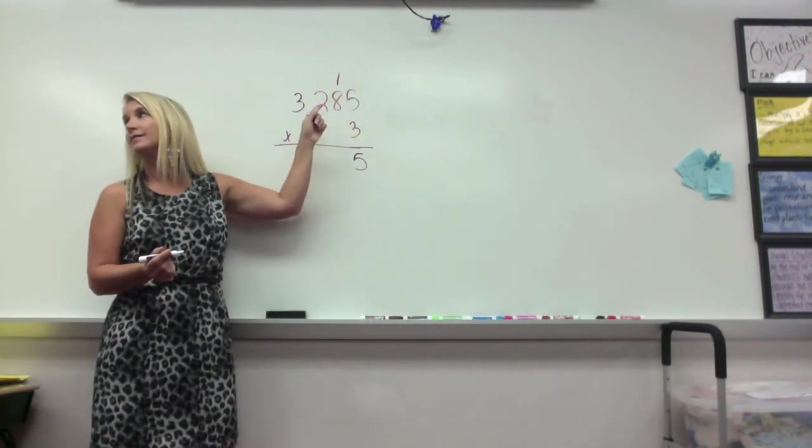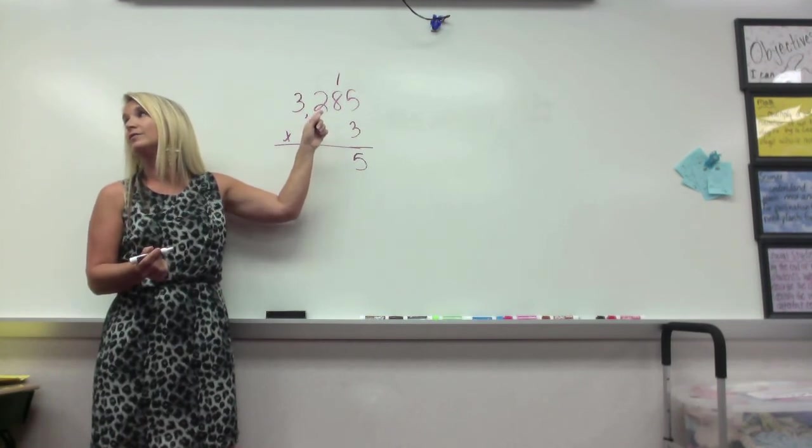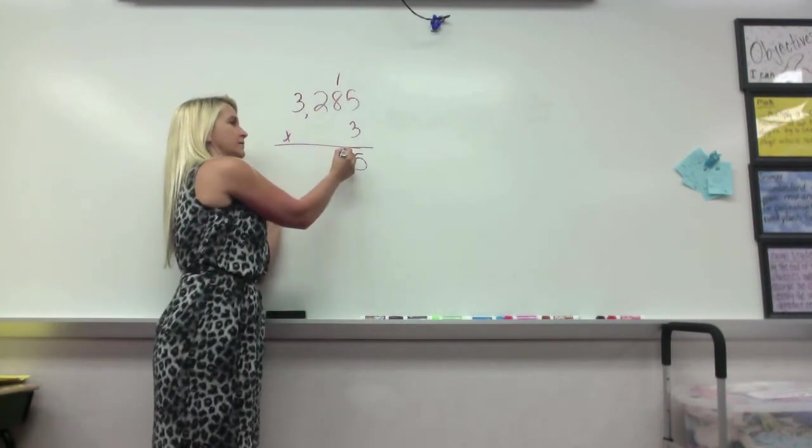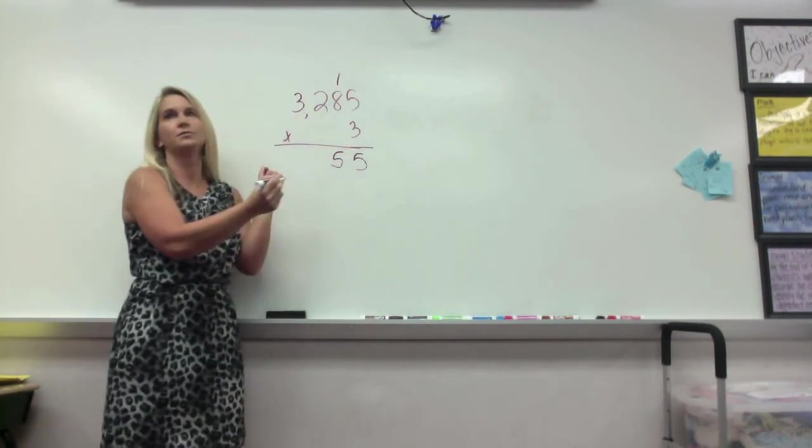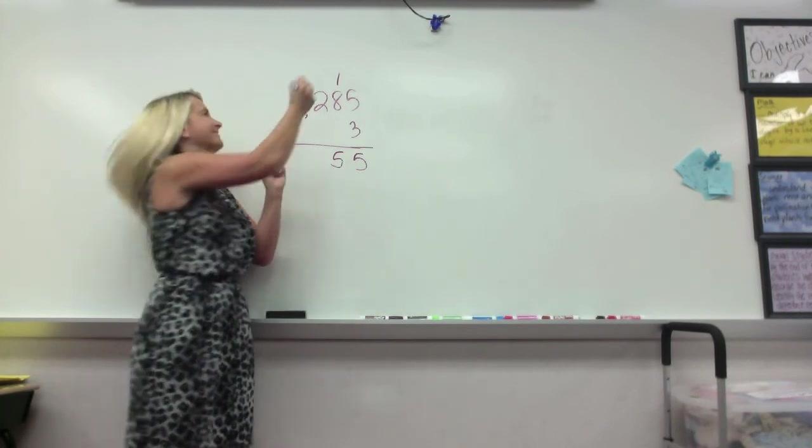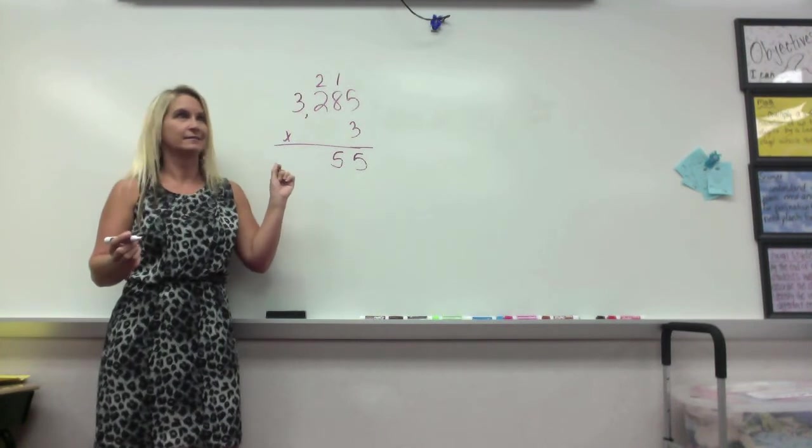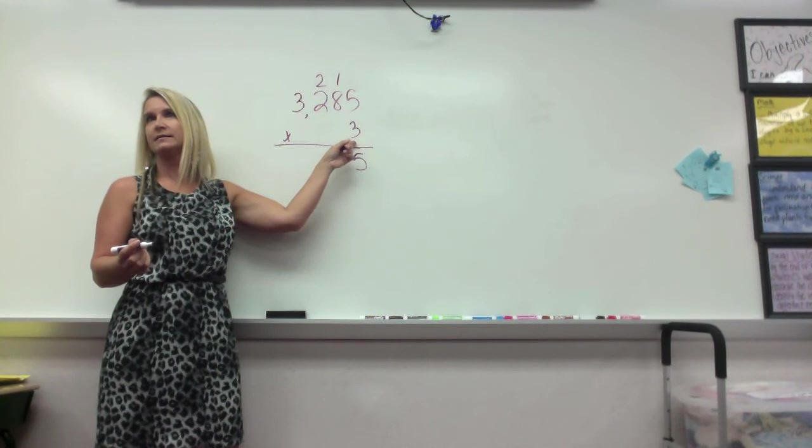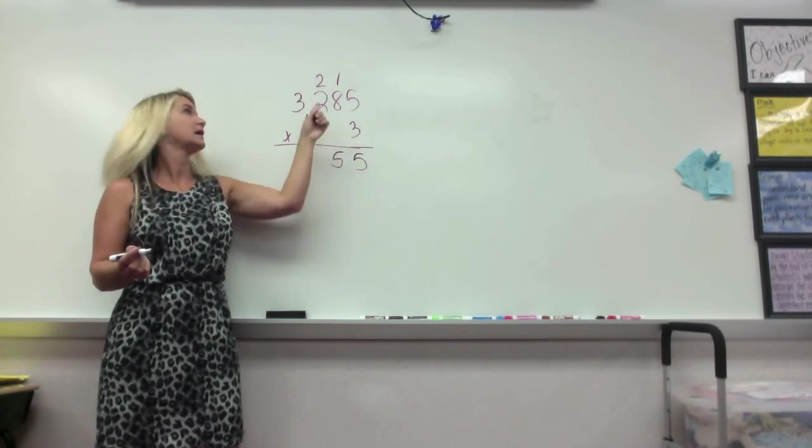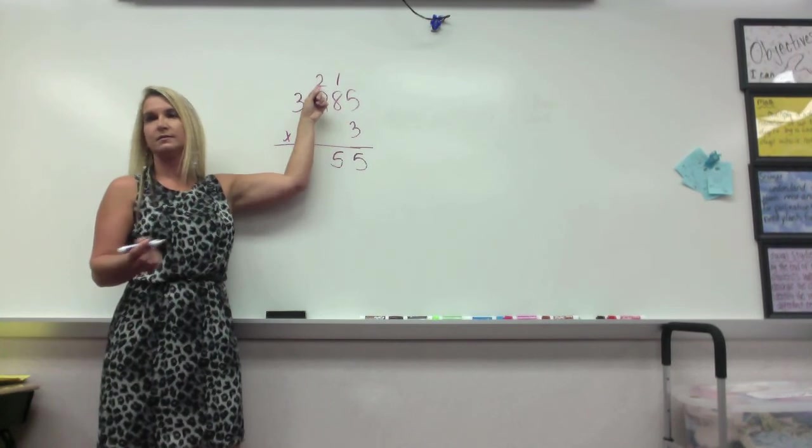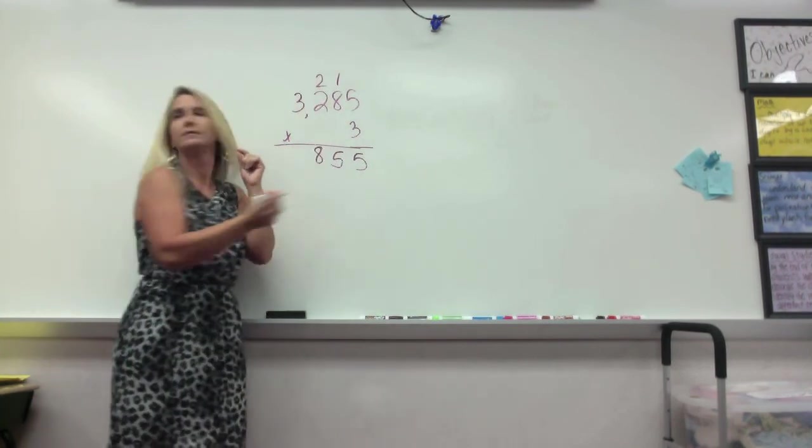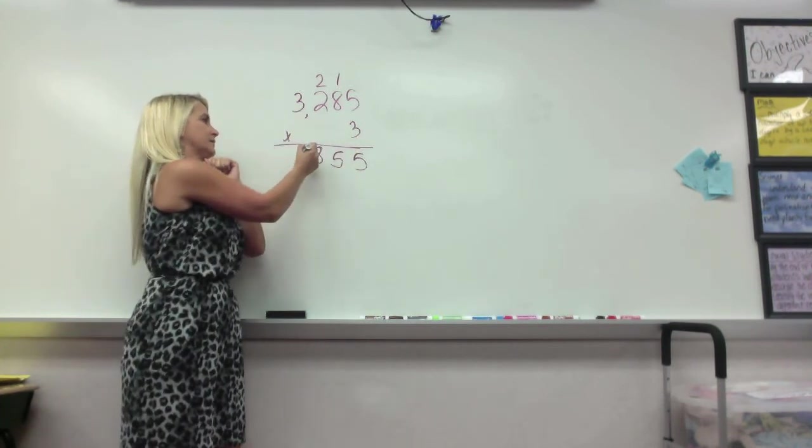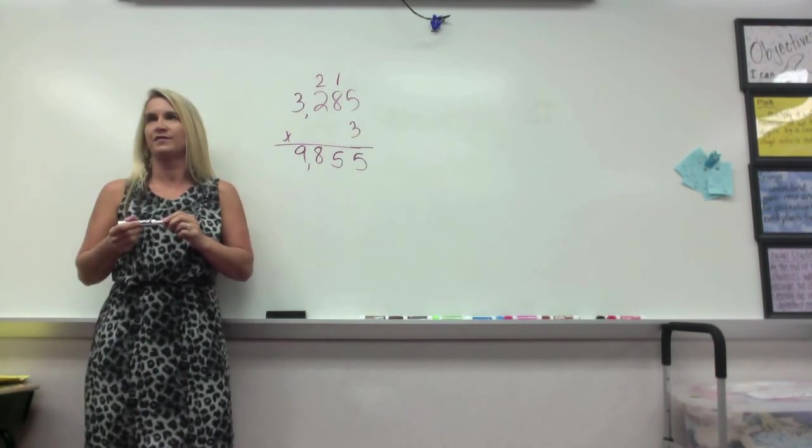3 times 8. 24 plus 1 is 25. And I put 5 here, and I do what with the 2? Regroup it on the 2. 2 times 3. 2 times 3 is 6, plus 2 is 8. Am I regrouping anything? Nope. Nothing to regroup. And then 3 times 3. 3 times 3 is 9. How many of you got 9,855?